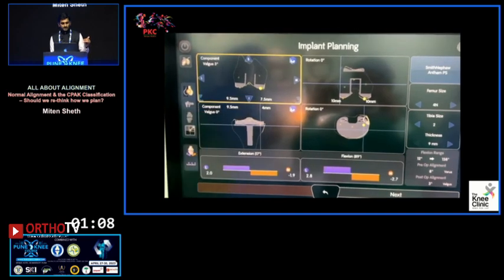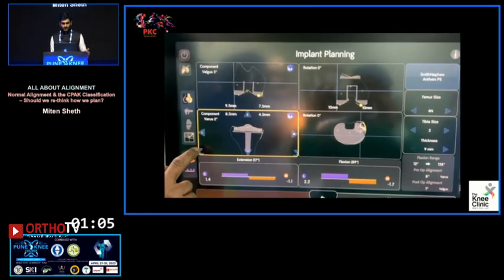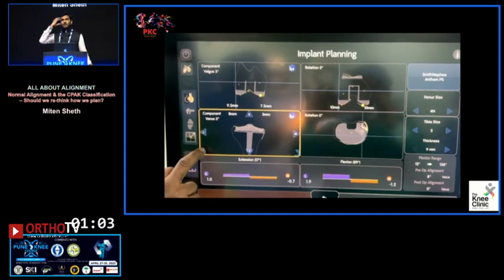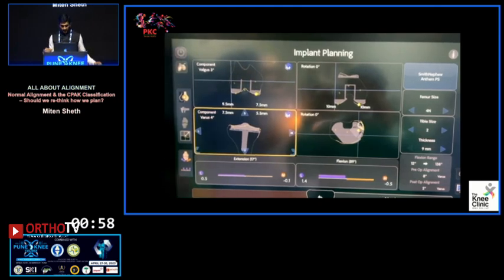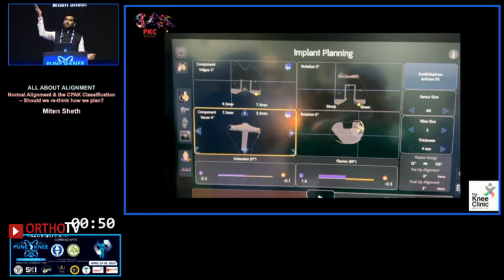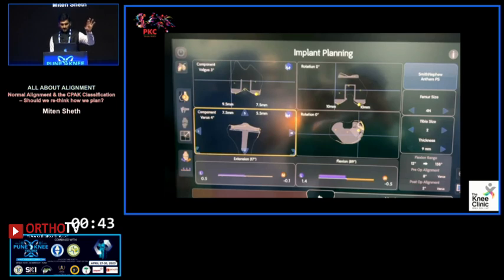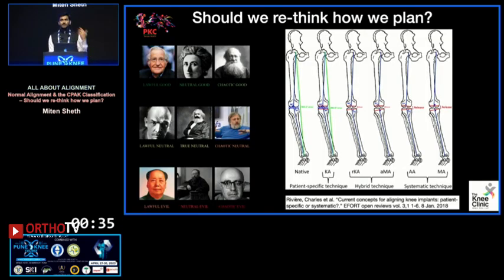We put the femur in the same LDFA — three degrees of valgus — and the tibia in four degrees of varus matching the MPTA of 86, while keeping the joint morphology. You can see the trochlear matching on the top right. We're cutting 7.5mm distal medial, 9.5mm distal lateral, and 9.5mm posteriorly on both sides, using an implant that resurfaces 9.5mm at all four points. If soft tissue tensions are matched, bone morphology reshaped, and alignment parameters met, wouldn't that be nicer?